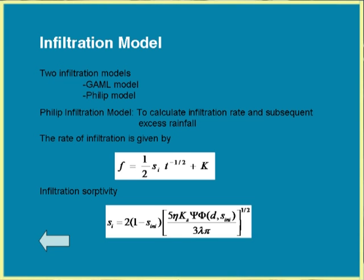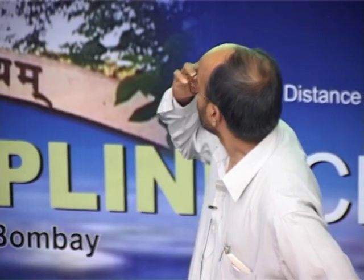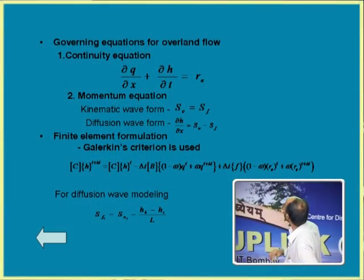Another important component is the infiltration model. Infiltration is one of the major components in watershed modeling, especially as it affects runoff significantly. Two infiltration models were tried: the Green-Ampt model and the Philip model. For the Philip infiltration model, the infiltration rate is calculated using the equation where Si is the initial soil moisture, Ke is the saturated hydraulic conductivity, and T is time. The sorptivity Si is given by another equation, and Si, Ni are the initial soil moisture parameters — these can be obtained for the given soil type.